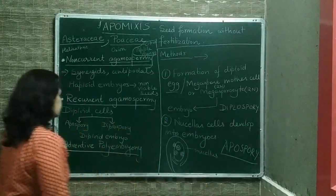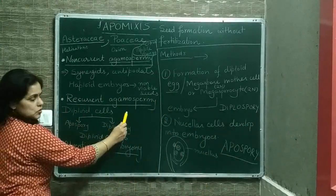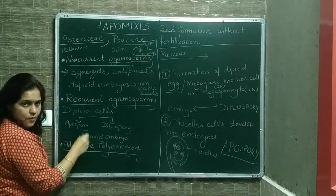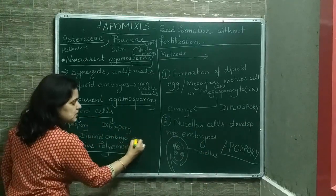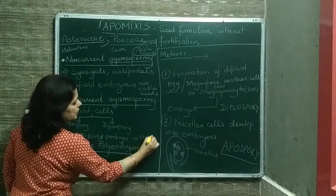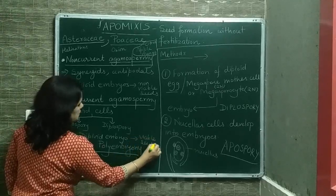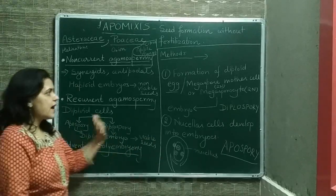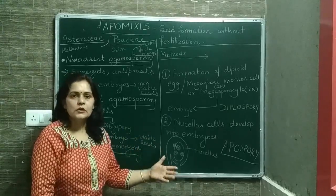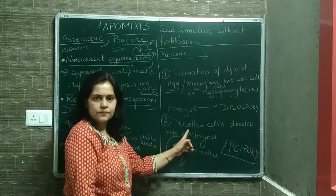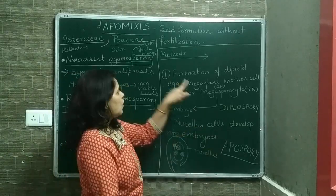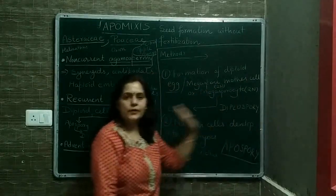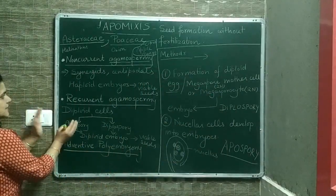So in recurrent agamospermy, diploid embryos are being formed which will make viable seeds. It occurs in two ways: either by formation of embryos by nucellar cells, which is known as apospory, or by formation of diploid eggs, known as diplospory.